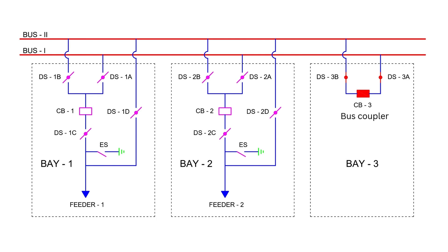Under normal conditions, feeders are distributed between bus 1 and bus 2. For instance, feeder 1 might be connected to bus 1, with DS1A and DS1C closed, while DS1B and DS1D remain open. Circuit breaker CB1 is closed, and the earth switch is open. Feeder 2 might be connected to bus 2, with DS2B and DS2C closed, while DS2A and DS2D remain open. Circuit breaker CB2 is closed, and the earth switch is open. This configuration ensures balanced operation and flexibility.